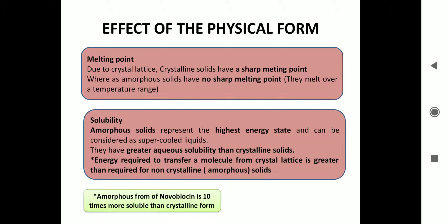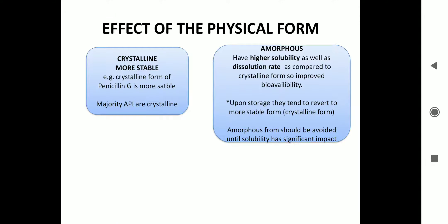The amorphous form is more soluble than the crystalline form. Regarding stability, the crystalline form is more stable. For example, Penicillin G is more stable in the crystalline form, and majority of the API are crystalline.